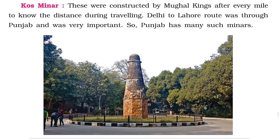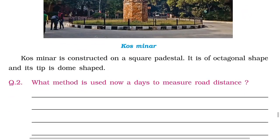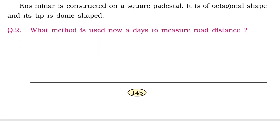Kos Minars were constructed by Mughal kings after every mile to know the distance during travel. The Delhi to Lahore route was through Punjab and was very important, so Punjab has many such Minars. Kos Minar is constructed on a square pedestal. It is octagonal in shape and its tip is dome shaped.